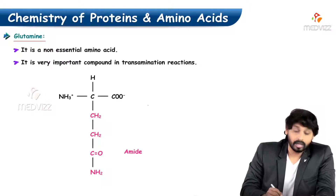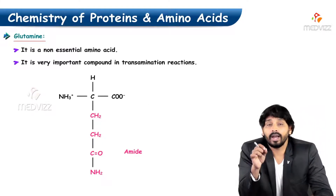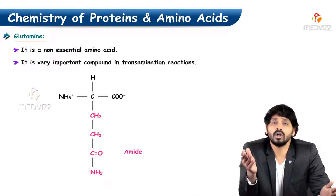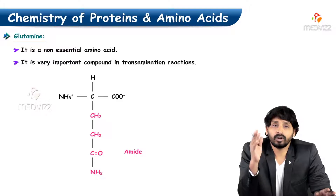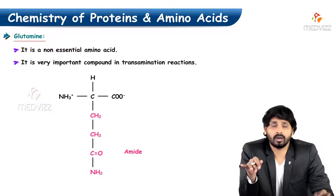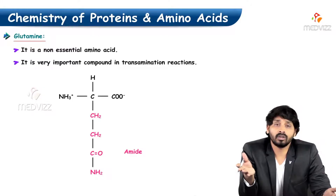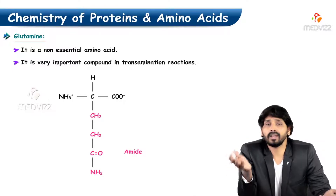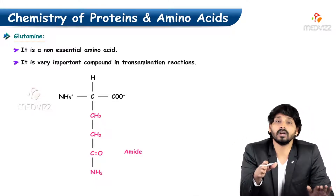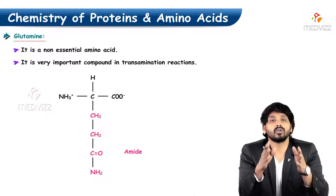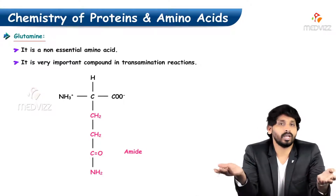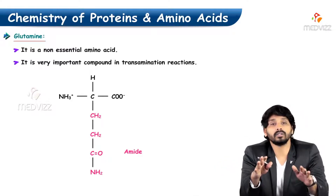Glutamine, which carries an extra amino group in amide form, is also involved in detoxification of ammonia. Ammonia is very toxic, especially in brain cells, so it must be transferred to the liver for detoxification. Free ammonia is not allowed to travel directly; instead, ammonia is taken up by glutamic acid and converted to glutamine, which is transported in the blood to the liver, where it releases its amino group as ammonia for use in urea formation.